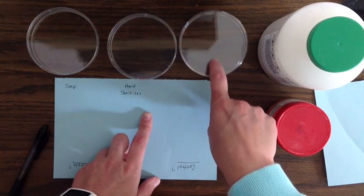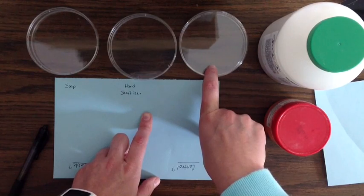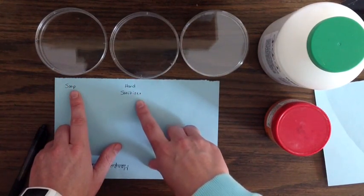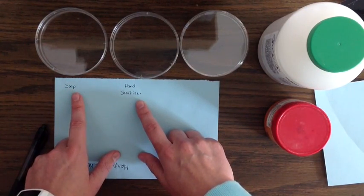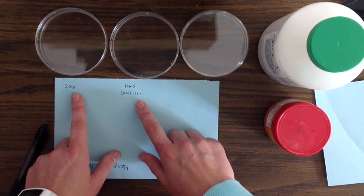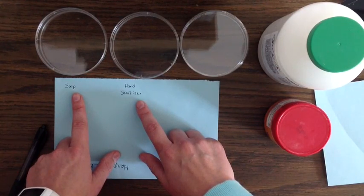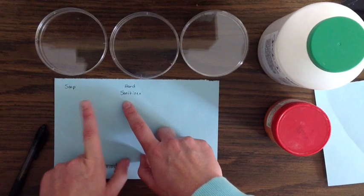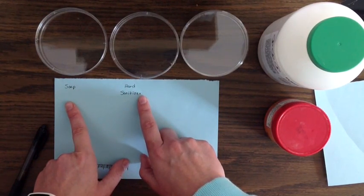Nothing happened to this petri dish. It stayed the same. We have two different things that we're testing here: soap and hand sanitizer. That's our manipulated variable. Also, a part of the control is that whatever object we swiped, when we swiped through here, we use the exact same object. That's a part of the control.